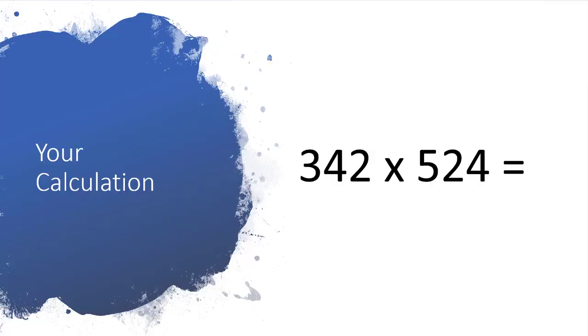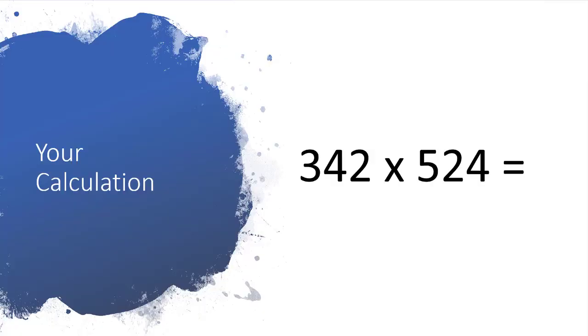First of all, let's look at the calculation that we want. We've got 342 multiplied by 524.